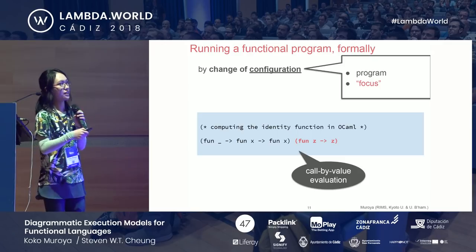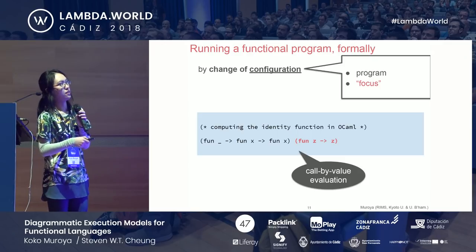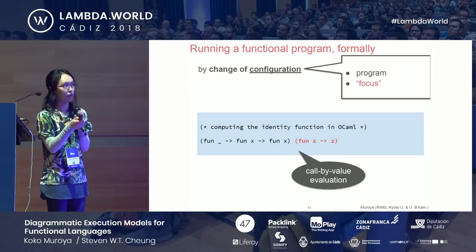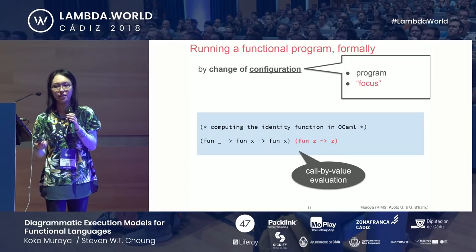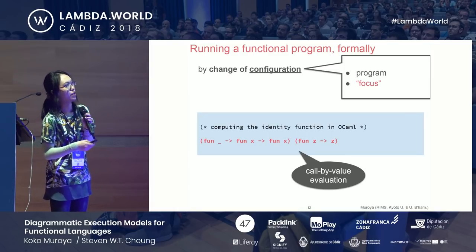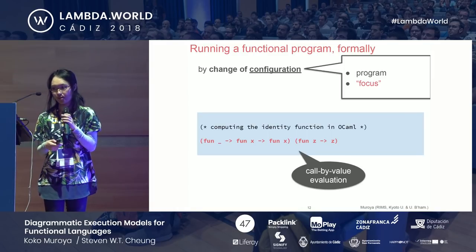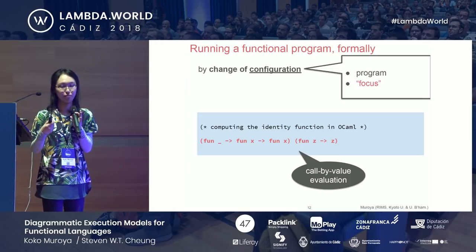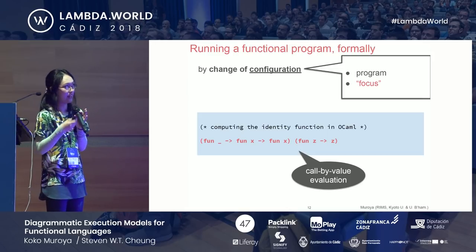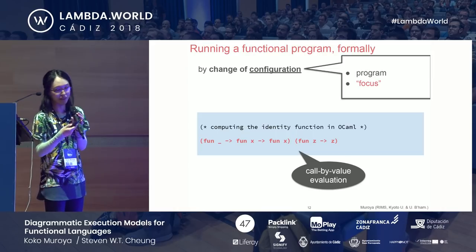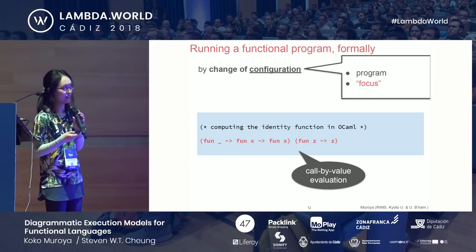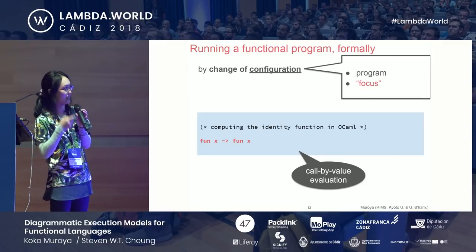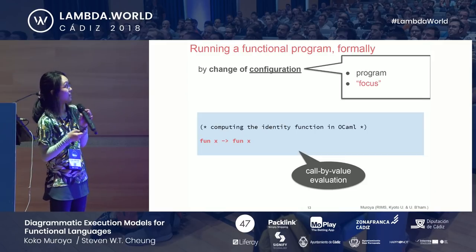This focus is done — it only highlights a value. So this time we expand the focus back to the whole program. Now we can see the outer application, and it can be performed because the argument is now a value. Finally we can throw the argument away and get the identity function.